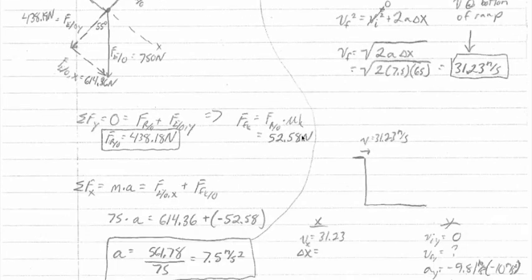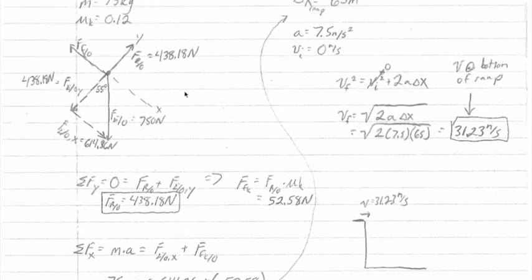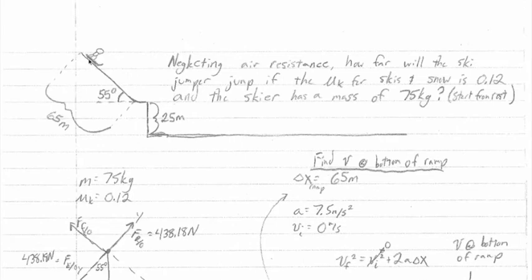So far we've done some work to find the acceleration of the skier on the ramp by doing force analysis. That amount of information will allow us to know, when he starts from rest after we do some kinematics here, given his acceleration and this distance of 65 meters, how fast the skier is going at this point, because that information is what we'll use to figure out how far he jumps.